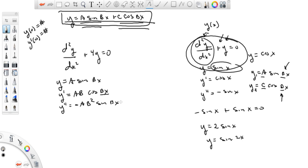So now when we sub this and this into our original equation, it's going to read minus a b squared sine of bx plus four times y. Now, y itself is a sine of bx equals zero.